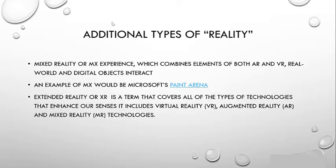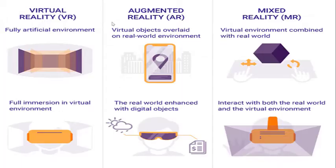There's one more type of reality worth talking about, less common than the other two: mixed reality. Mixed reality is somewhere in the middle of both AR and VR — it adds real-world and digital objects so that they can interact. A good example would be Microsoft Paint Arena. It extends what both VR and AR can do: if you see a chair and walk around it with a camera, you can place it in virtual reality and view the 3D model of that chair — you can do both real world and virtual.